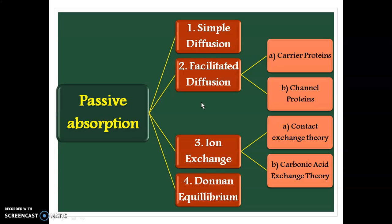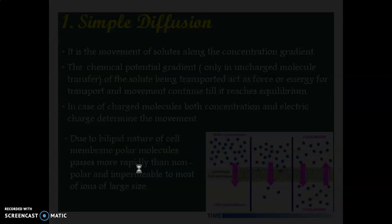Passive absorption is further of four types: simple diffusion, facilitated diffusion — which takes place through carrier proteins or channel proteins — ion exchange, for which there are two theories: contact exchange theory and carbonic acid exchange theory, and Donnan equilibrium. We will discuss all these one by one in detail in further slides.